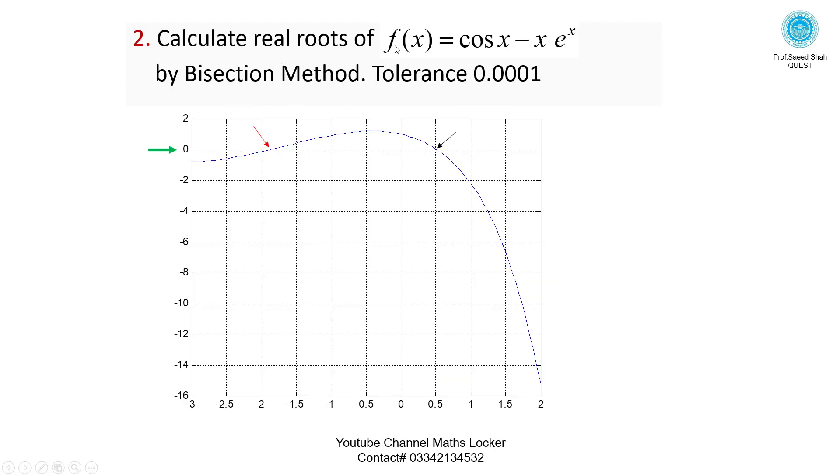Calculate real roots of f(x) = cos(x) - xe^x by bisection method, tolerance 0.0001. Here is a root lying in the interval, and another root lying in the interval 0 and 1.